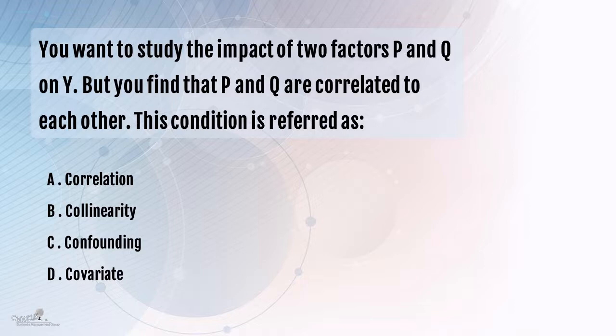Y is the outcome measure — the dependent variable — and theoretically P and Q are independent variables, but we find out they are not really independent, so we can call them predictors. In this situation, where Q impacts P, and P in turn impacts Y, and Q also directly impacts Y, the relationship between P and Y gets distorted. It gets either amplified too much, reduced, or reversed — a positive relationship becomes a negative relationship. All these phenomena are because of confounding.